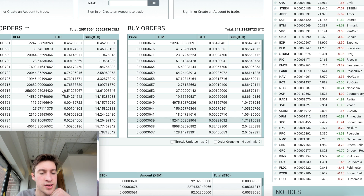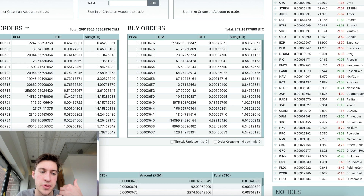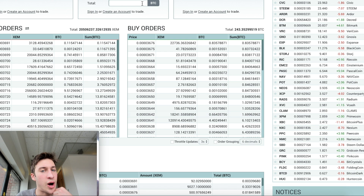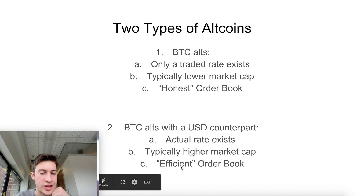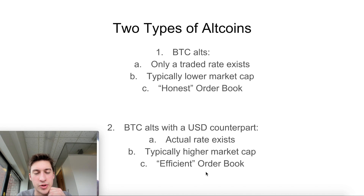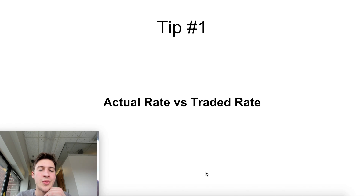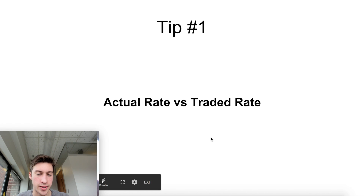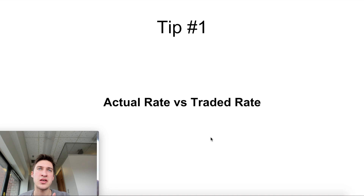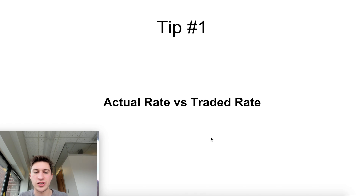At 3716, we currently have a large amount of offers, so it's going to be hard for the market to breach that level. However, this is going to be completely different when we look at Bitcoin alts with a USD counterpart. They do not have an order book based on supply and demand, but more of an efficient order book. With Bitcoin alts with a USD counterpart, we have an actual rate and a traded rate. For example, for XRP/BTC, the actual rate is XRP/USD divided by BTC/USD.